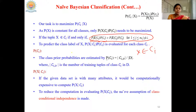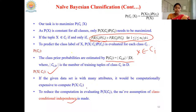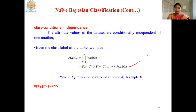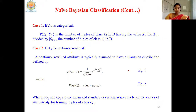How to calculate P(Ci)? We have a formula, the same used in decision trees. How to calculate P(X|Ci)? The complexity of this calculation depends on the number of attributes in X. To simplify, we use the class conditional independence property, assuming each attribute is independent of the others, so P(X|Ci) can be expanded as the product: P(X1|Ci) × P(X2|Ci) × P(X3|Ci) and so on.